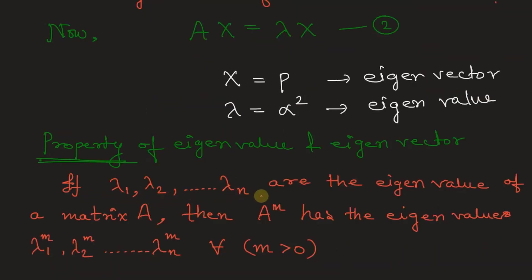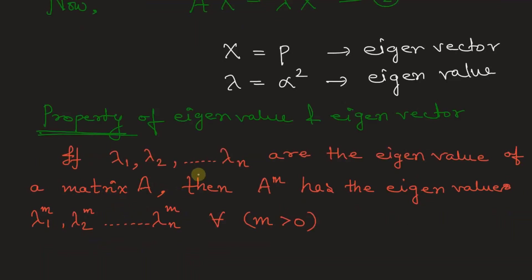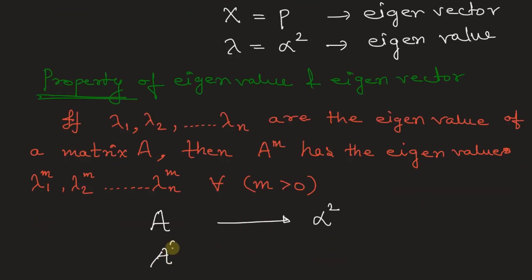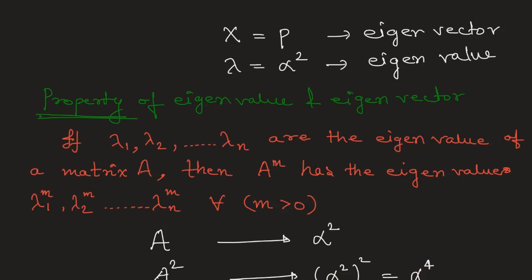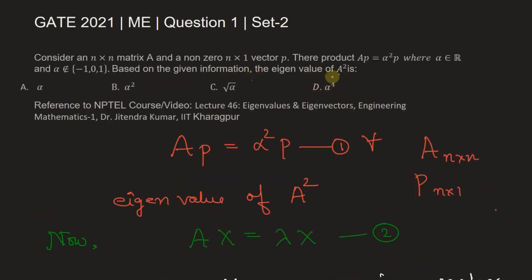From the property of eigenvalues and eigenvectors, if λ₁, λ₂, and so on are the eigenvalues of matrix A, then Aᵐ has eigenvalues λ₁ᵐ, λ₂ᵐ, and so on. Using this property, if matrix A has eigenvalue α², then A² will have eigenvalue (α²)² = α⁴. Therefore, the eigenvalue of A² is α⁴, so option D is the correct answer.